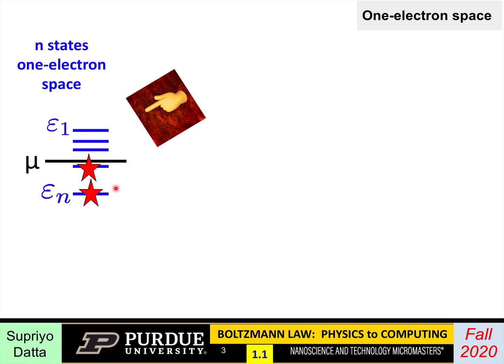Left to itself at equilibrium, the electrons tend to go to the lowest energy levels. Why don't they all crowd into the same one? That's where we invoke the exclusion principle: each level can accommodate at most one electron. So the lowest levels are usually filled and the upper levels are empty. At low temperatures there's a clean dividing line between them, which we call the electrochemical potential, or mu.